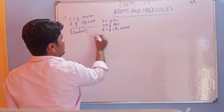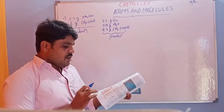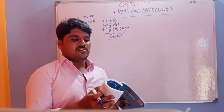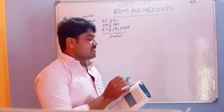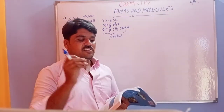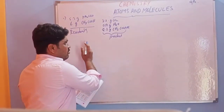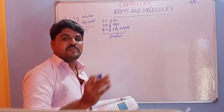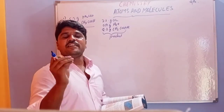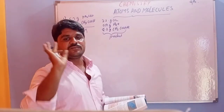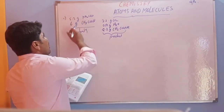This is the data. Show that these observations are in agreement with the law of conservation of mass. These are the reactants and these are the products. According to the law of conservation of mass, the mass of the reactants must equal the mass of the products. The statement is: mass can neither be created nor destroyed in a chemical reaction.